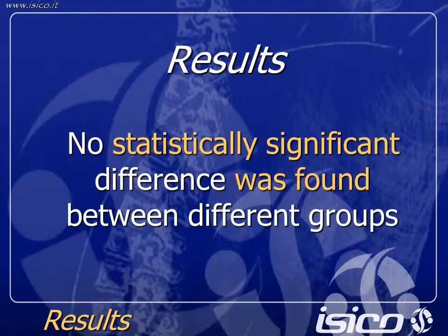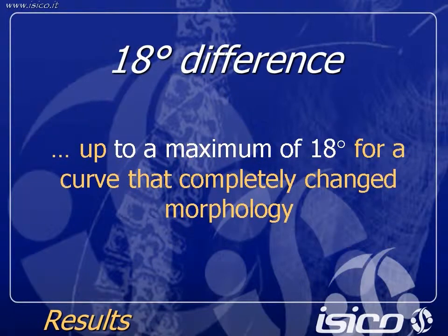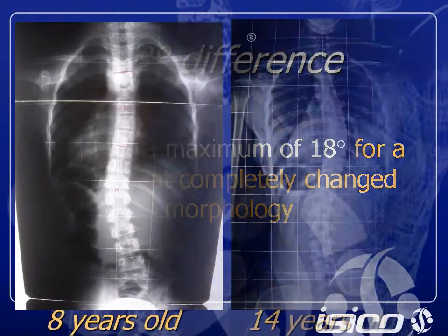End vertebra changed in 62.8% of curves. We didn't find any statistically significant difference between different groups. Measuring always the same end vertebra caused an overestimation of positive results of 3.5 to minus 2.5 degrees. In one case, the maximum was a difference of 18 degrees for a curve that completely changed its morphology.